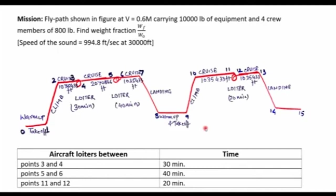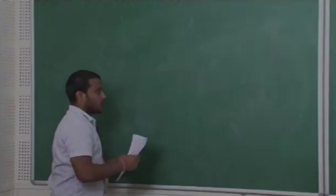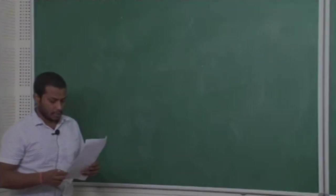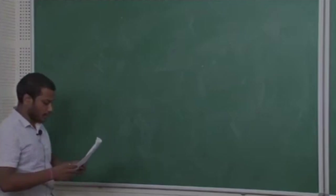As shown in the figure, this is your mission profile. Aircraft loiter between points 3 and 4 for 30 minutes, points 5 and 6 for 40 minutes, and points 11 and 12 for 20 minutes. Same problem, only mission profile has been changed in this example.